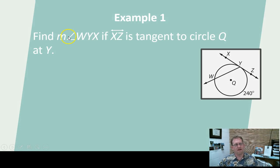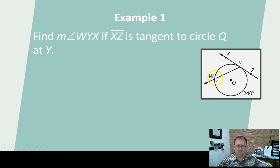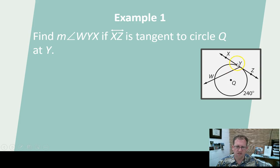Let's do an example. Find the measure of WYX if XZ is tangent to circle Q at Y. Circle Q, point Y is the point of tangency, XZ is the tangent line, and YW is a secant ray. They want to know the angle of WYX. This arc they're giving you is 240 degrees. The balance would be 360 minus 240, which is 120. So this is 120 degrees of arc, which means the angle is half of 120, which is 60 degrees.